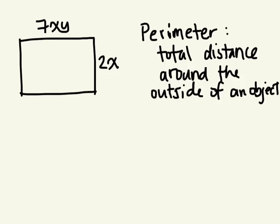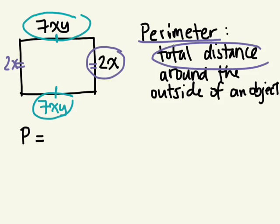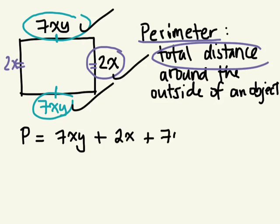So the length is 7xy. So I need to add this plus what? Plus 2x. What would this side length be if that's 7xy? What would the other side be? And then what's the other side length? So to find the perimeter, we need to find the total distance around this object, around the shape. So I need to add 7xy plus 2x plus 7xy plus 2x.